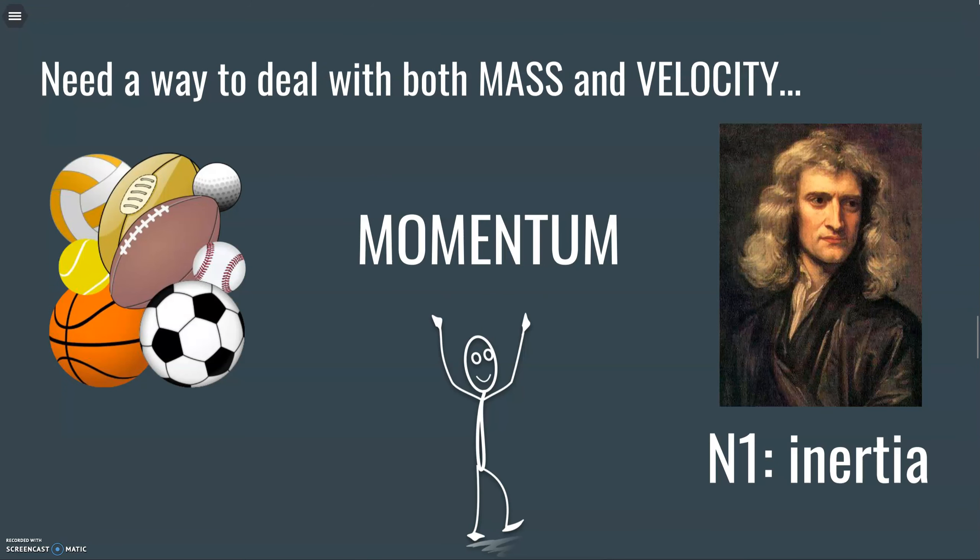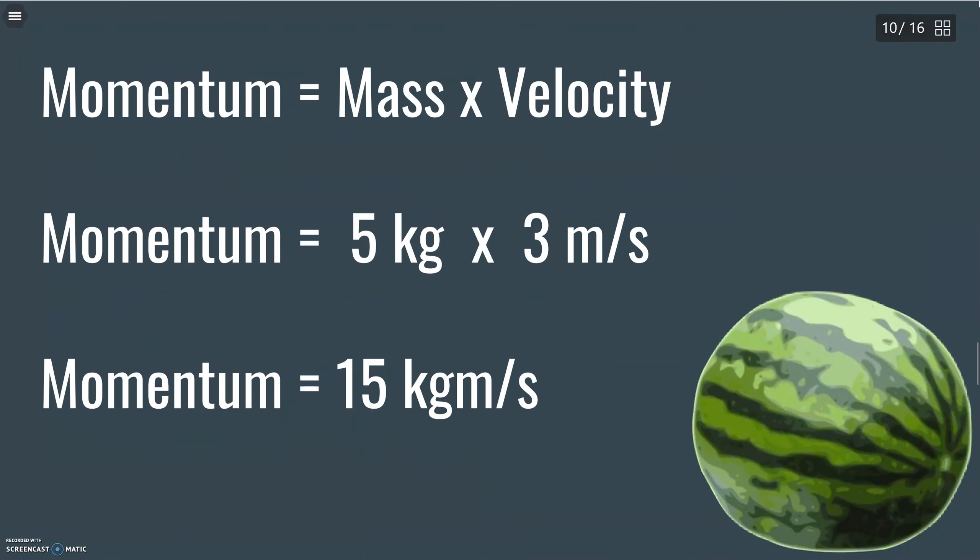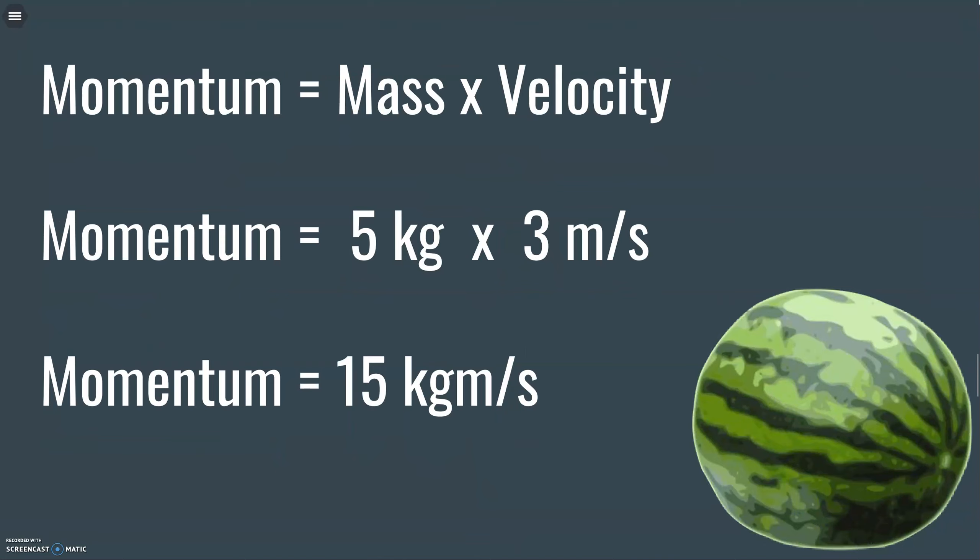You may have heard about inertia when we talked about Newton's first law, something that's in motion stays in motion, at rest stays at rest, that kind of stuff. Well, this momentum is kind of like inertia in motion. It's moving mass, which makes sense. We're dealing with mass and velocity. So we're just literally going to multiply them. Mass times velocity.